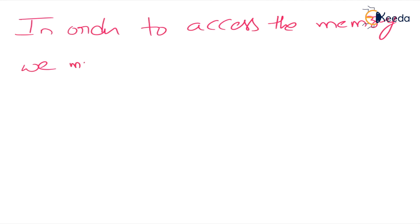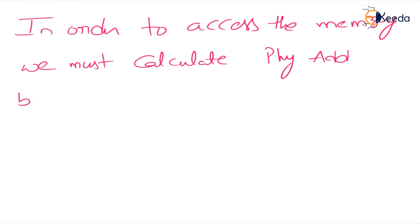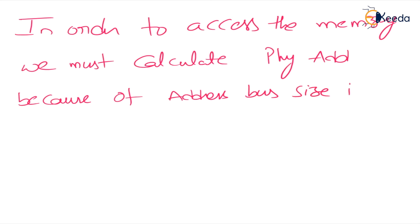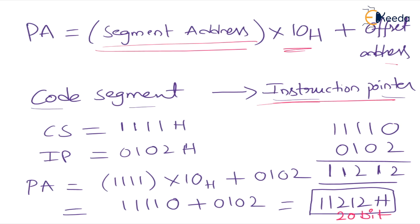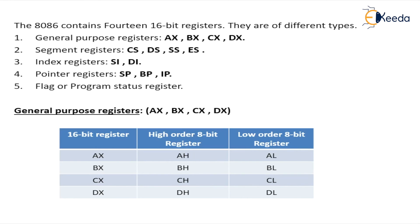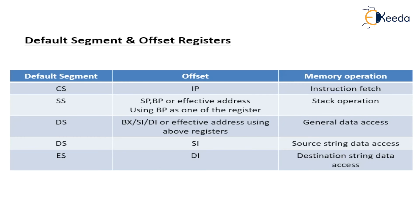In order to access the memory, we must calculate the physical address because the address bus size is 20 bit. That is very important. The physical address formula is: segment address × 10H + offset address. For code segment, the default offset register is the instruction pointer.